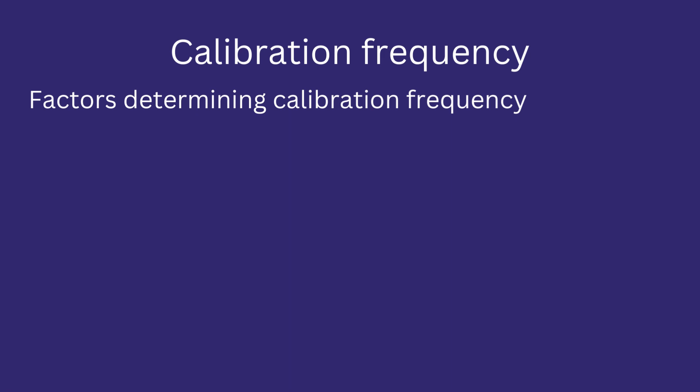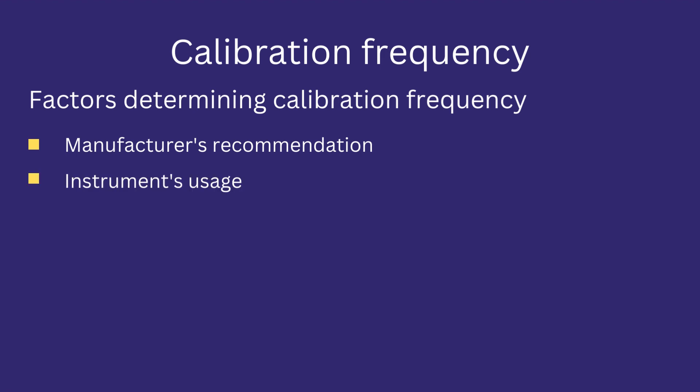Some factors that determine the calibration frequency include: Manufacturer's recommendation — setting the frequency of calibration according to the guidelines of the instrument manufacturer. The manufacturer provides various options for selecting the calibration frequency, which can be found in the maintenance or troubleshooting manual of an instrument. Instrument usage — selecting the calibration frequency according to its usage. If an instrument is frequently used in a pharma process, it can be calibrated more frequently. On the other hand, if an instrument is less frequently used, its calibration frequency can be less.